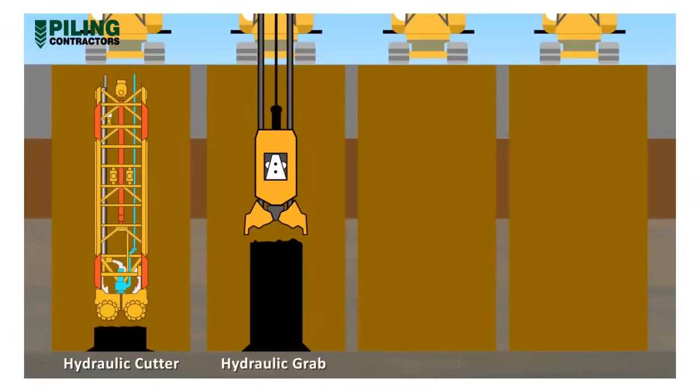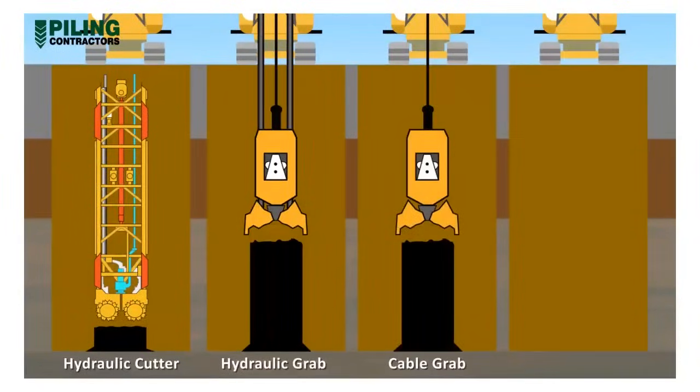The cable grab. This grab uses only pulley forces to close the grab jaws, and so is more suited to softer ground.